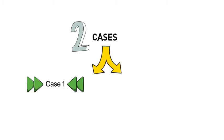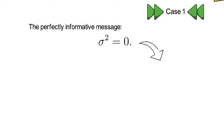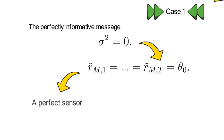Now let's consider two cases, case one and case two. Now for case one, we assume the message is perfectly informative about the signal, meaning sigma square equals zero. In that case, each realized risk premium coincides with the ex-ante expected equity premium. Now that says that if you have a perfect sensor, you need only one measurement to reveal the original signal.